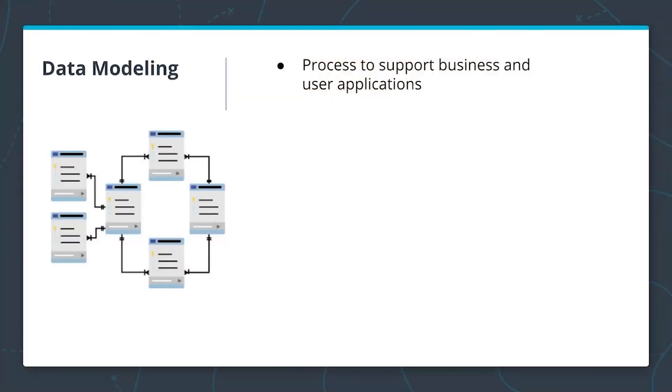Data modeling is a process to support both your business and your user applications. Let's discuss the difference between these two needs. Let's say we owned an online store. We will need to store that data so that we can understand how much stock we sold of a particular item — this is a business process. We'll also need to store information about our customer as they log into our website — a user application.